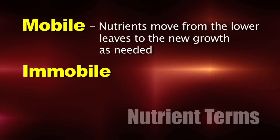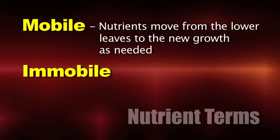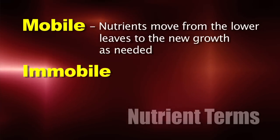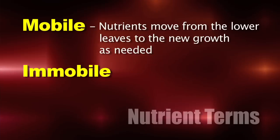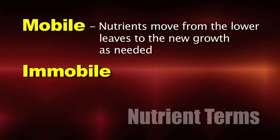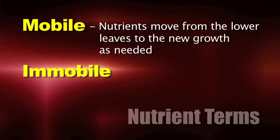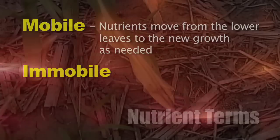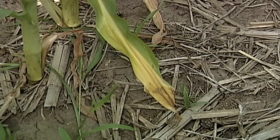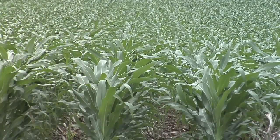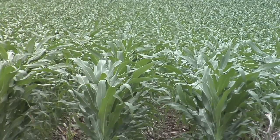Nutrients that are mobile within the plant will move around. New growth on a corn plant is always at the top, and if the plant is a little short in something, it'll pull those nutrients from the lower parts of the plant to feed that new growth. So the new growth gets the best food for the mobile nutrients. The lower leaves on a corn plant may start to show deficiencies because they had plenty of nitrogen but now have to give it up to the top part of the plant because that's where active growth is happening.